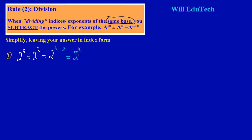We're not going to work this out fully. We know that this would give us eight. However, we were asked to leave our answers in index form, so we leave the answer as a base raised to a power — that is index form.